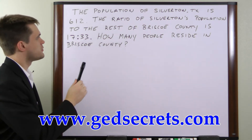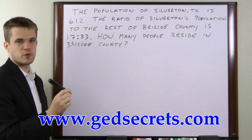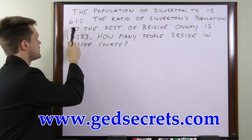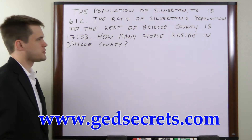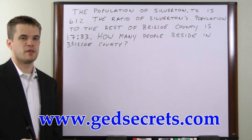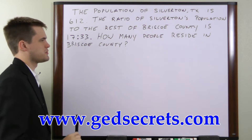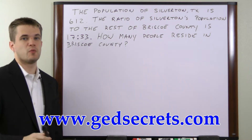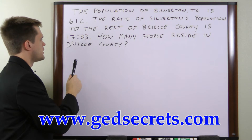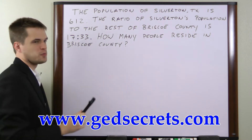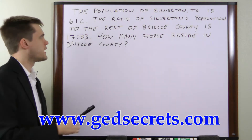Because we're given the population of the town, we're going to divide the population by the number in the ratio that represents the population of the town. That will tell us how many people each one in the ratio represents. Once we have that number, we'll add the two ratio numbers together and then multiply by the number of people each one represents. So let's do that.